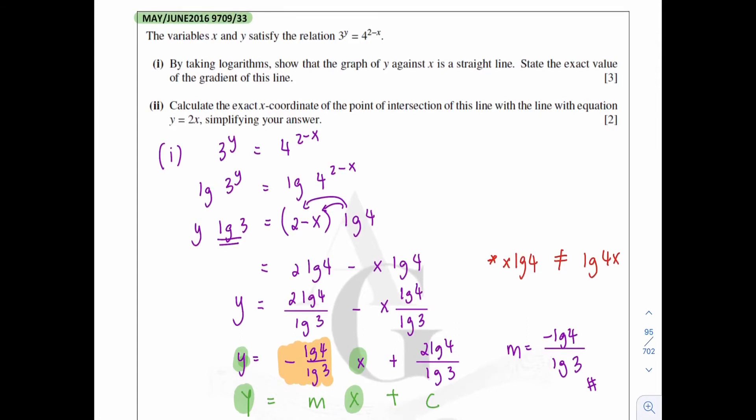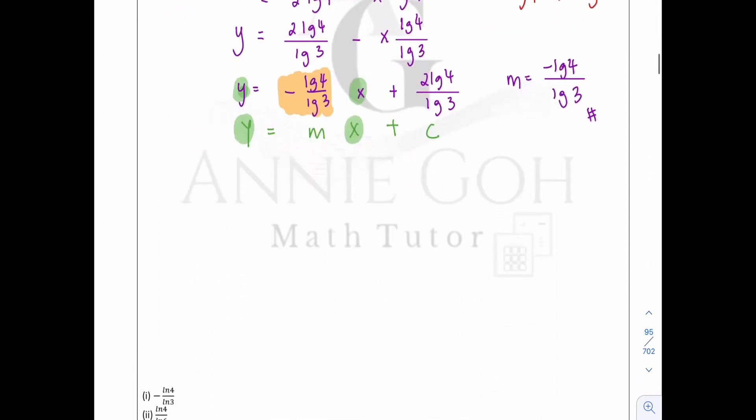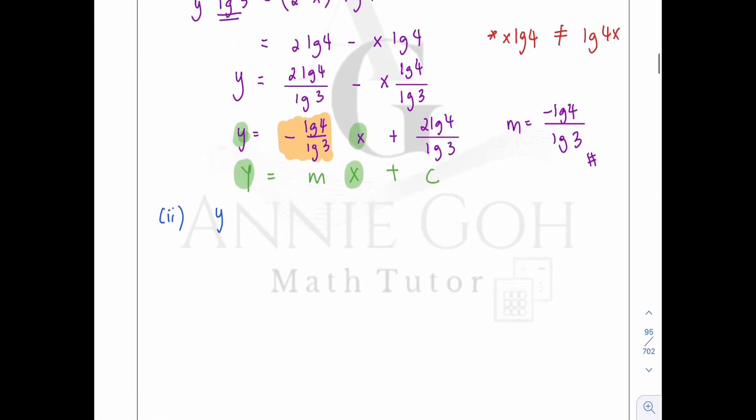That's how we do for part 1. Okay, now let's proceed to part 2. Calculate the exact x coordinate of the point of intersection of this line with the line with the equation y equals 2x and simplify your answer. To solve this question, you just need to solve these two equations simultaneously. Okay, so let's try it together. For part 2, actually, you just need to substitute the y equals 2x equation into here to solve it simultaneously.